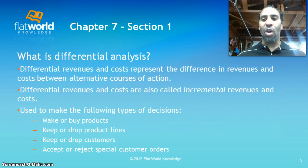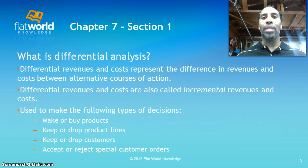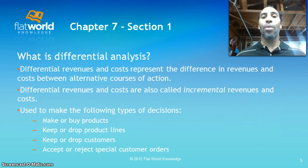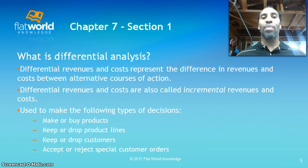Differential revenues and costs are also called incremental revenues and costs. They're used to make the following types of decisions: make or buy products — are we going to outsource or make the products ourselves? Keep or drop product lines — maybe my charcoal line just isn't selling, so do I drop it and continue with propane and gas? Keep or drop customers — some customers are not the most profitable to have. And accept or reject special custom orders, considering both quantitative and qualitative factors, such as whether an order will lead to additional future business.